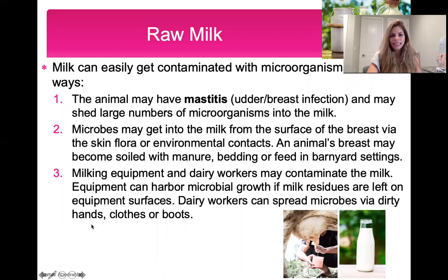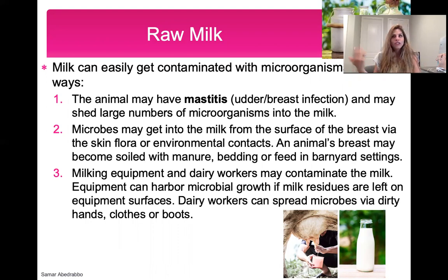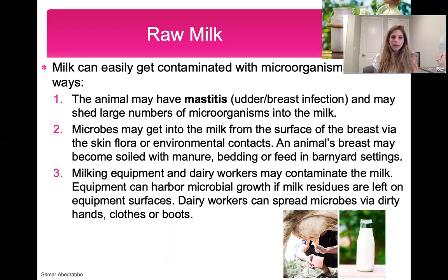Three major ways that raw milk can get contaminated with microbes: first, if the animal has a breast infection called mastitis, it can pass on microbes through the milk being expressed. Another way is that microbes can get into the milk from the surface of the animal's breast through normal skin flora — just like we have skin bacteria, animals do too — or through environmental contact. The animal's breast can also become contaminated with manure, dirt, bedding, or feed. Third, raw milk can get contaminated through milking equipment and dairy workers, so equipment must be sterile and workers must make sure they're not exposing the milk to their clothes, hands, or shoes.